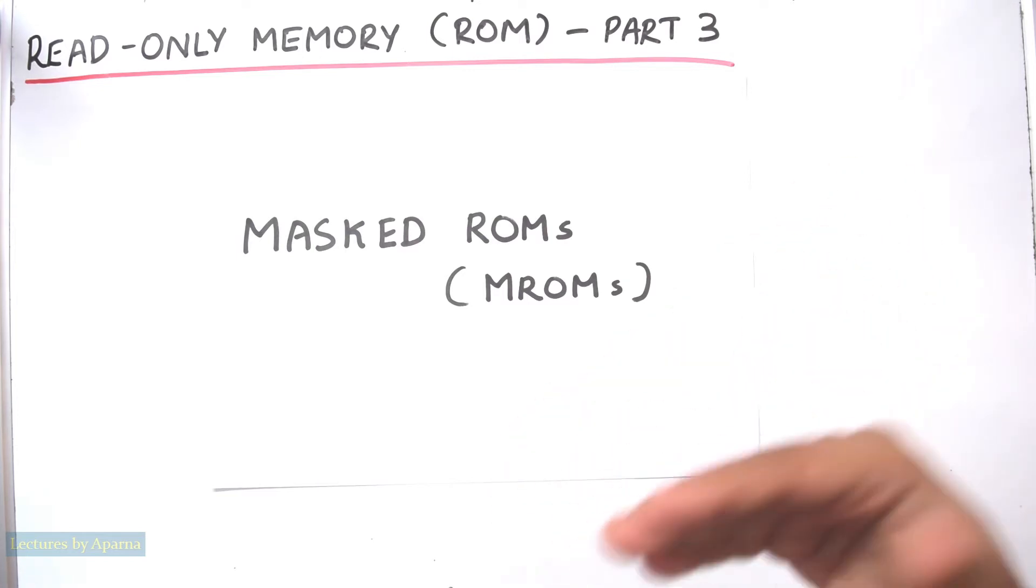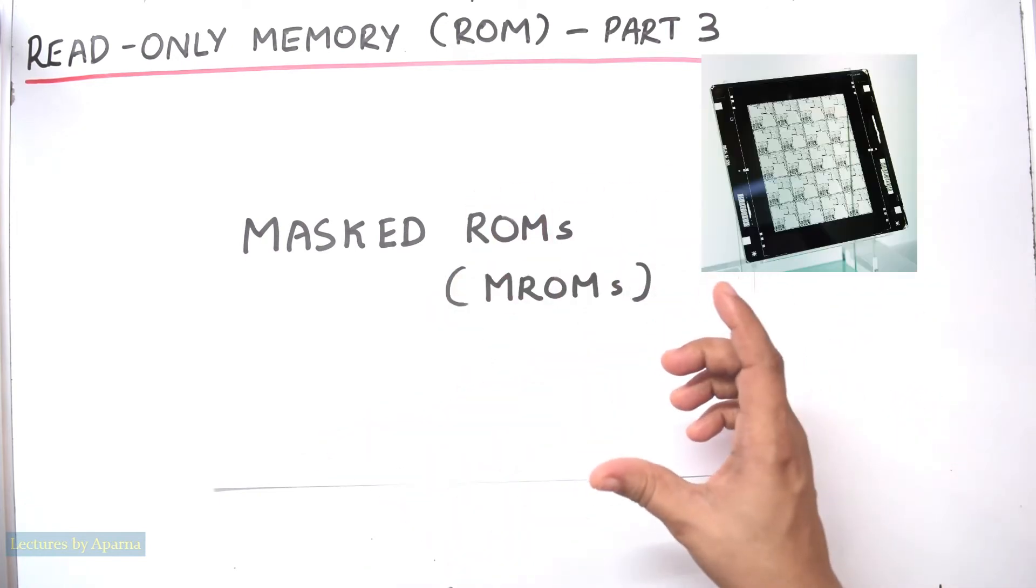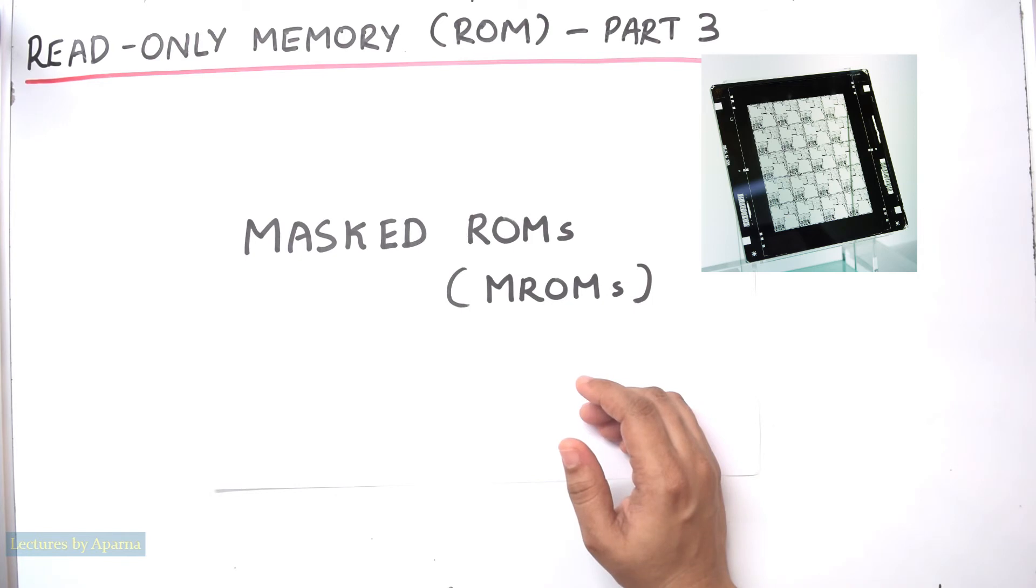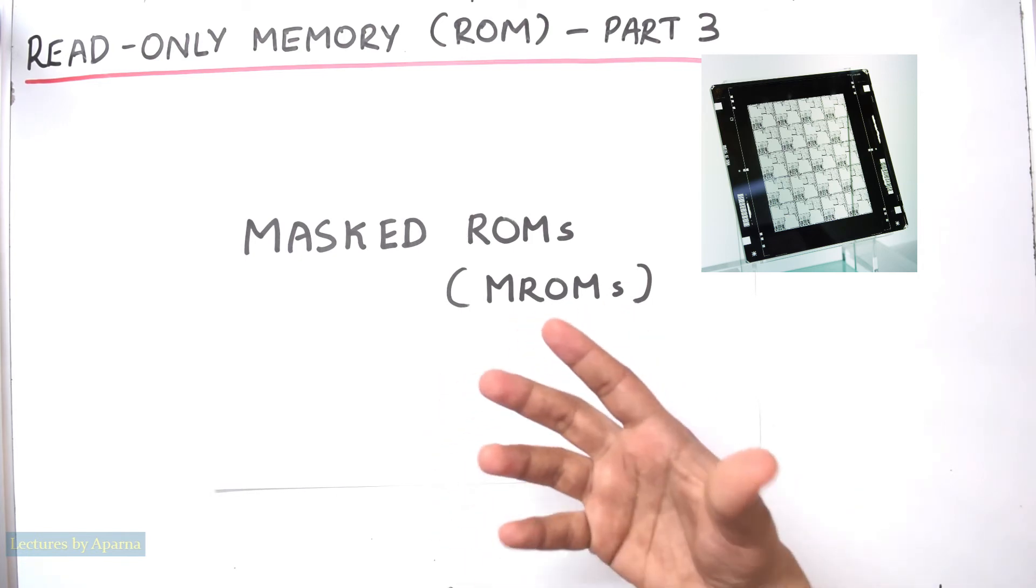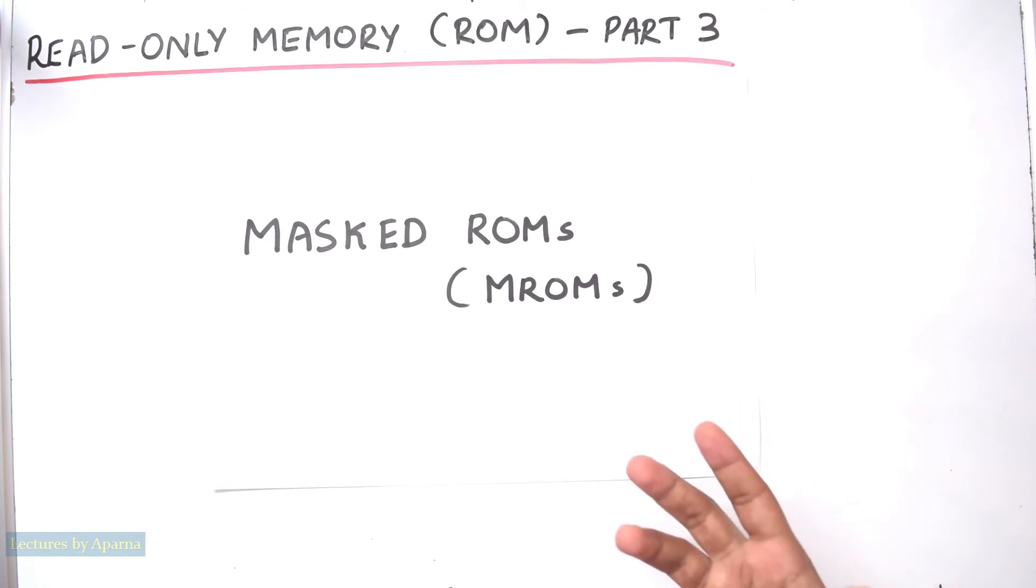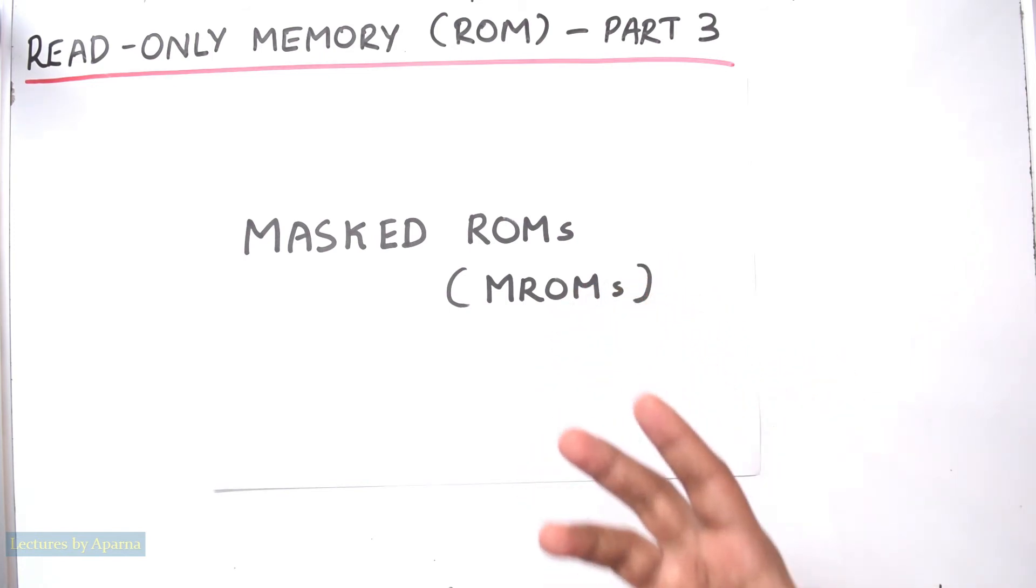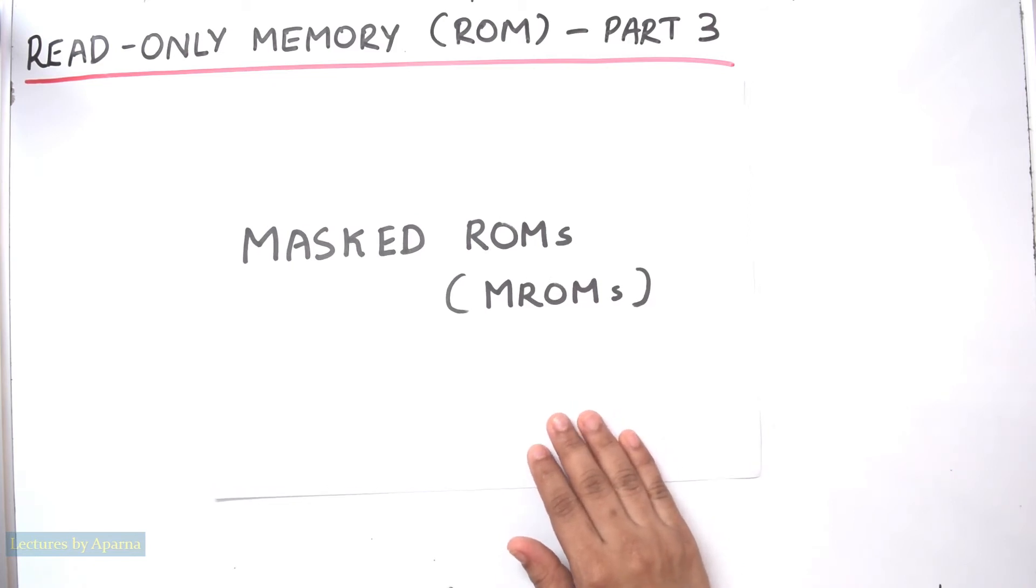It is the manufacturer who produces a mask which is a photographic template of your required circuit. Then this mask is used for the mass production of your ROMs. So this type of method is used only for mass production because the manufacturing cost is high. So only if it is done in large numbers, it will be economical.